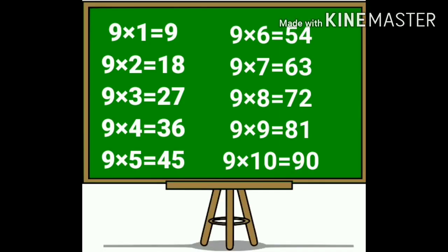Nine ones are 9. Nine twos are 18. Nine threes are 27. Nine fours are 36. Nine fives are 45. Nine sixes are 54. Nine sevens are 63. Nine eights are 72. Nine nines are 81. Nine tens are 90.